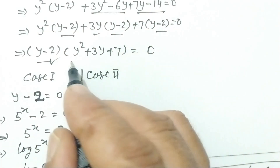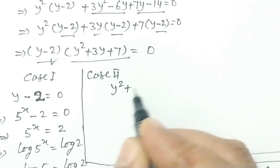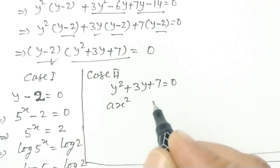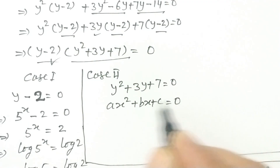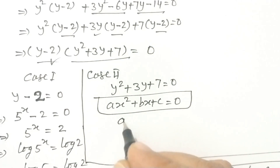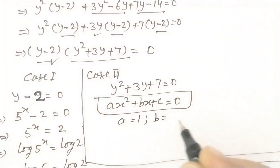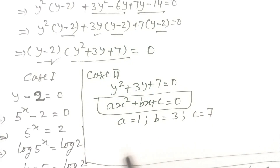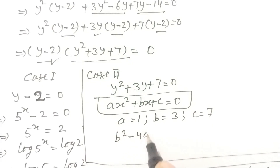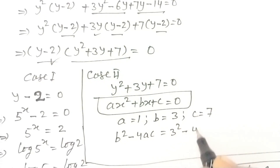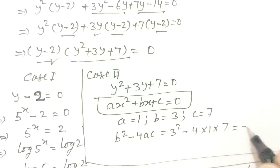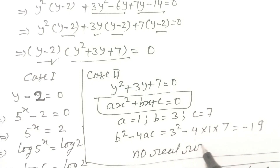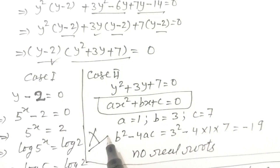Case two: y squared plus 3y plus 7 equals 0. Using the standard quadratic equation ax squared plus bx plus c equals 0, here a equals 1, b equals 3, c equals 7. So b squared minus 4ac equals 9 minus 28 equals minus 19. Since the discriminant is negative, there are no real roots, so we reject this case.